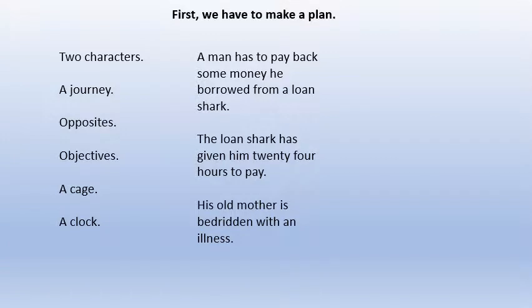So here's my example plan for 'Family Ties.' A man has to pay back some money he borrowed from a loan shark — a gangster who lends money at ridiculous interest rates and hurts or even kills you if you don't pay. The loan shark has given him 24 hours to pay, and his old mother is bedridden with an illness. The objectives: the loan shark wants his money back; the man wants to pay or get out of the situation. The 24-hour deadline is the clock. And he can't run away because the loan shark would hurt his mother — that's the cage.